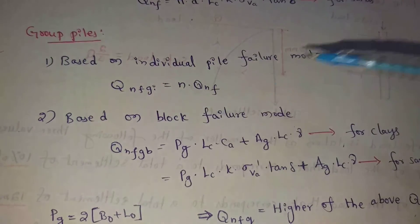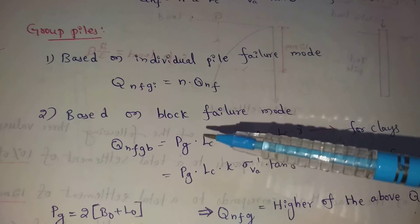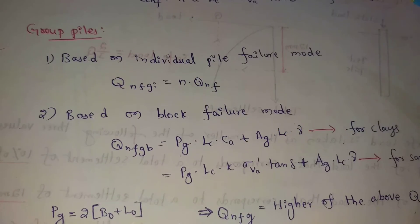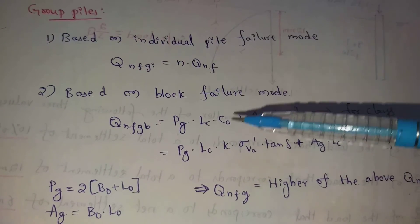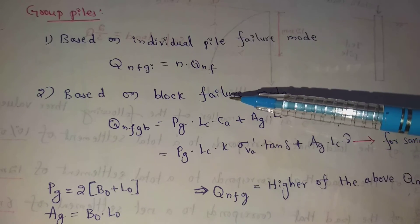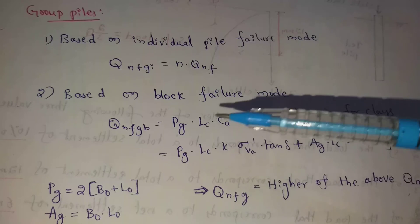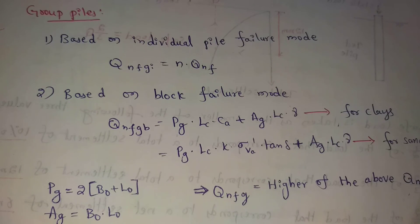Based on Block Failure Mode: QNF(GB) = PG × LC × CA + AG × LC × γ, where PG is the perimeter surface of the block (= 2(B₀ + L₀)), B₀ is the block width, L₀ is the block length, and AG is the block area (= B₀ × L₀).